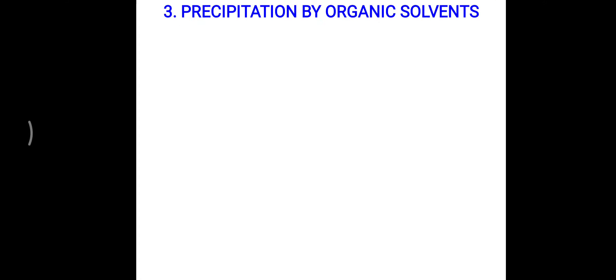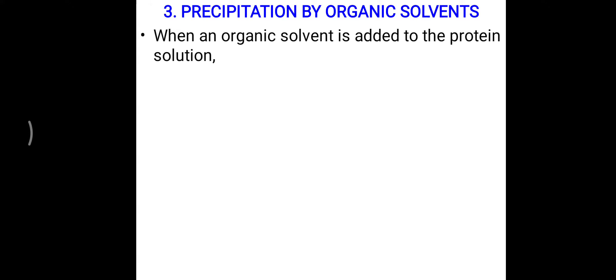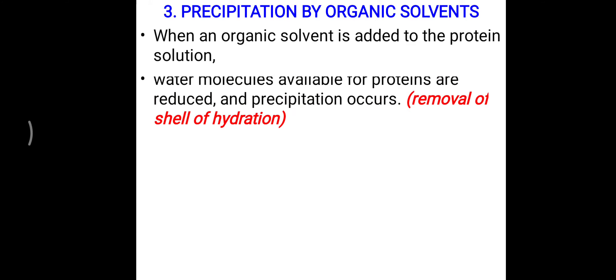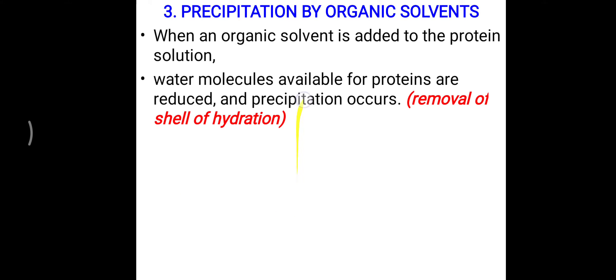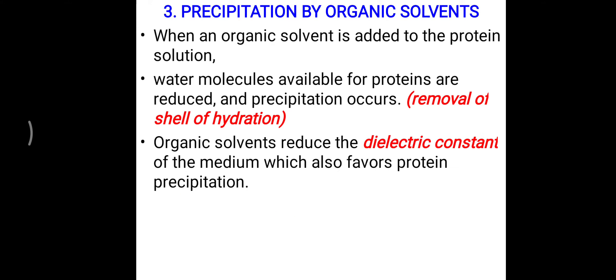Another precipitation reaction uses organic solvents, which also has clinical applications. When an organic solvent is added to a protein solution, water molecules available for the protein are reduced, the shell of hydration is removed, and precipitation occurs. Organic solvents like alcohol, when added to a protein solution, remove the shell of hydration surrounding the protein and lead to precipitation. Organic solvents also reduce the dielectric constant of the medium, which further favors protein precipitation.